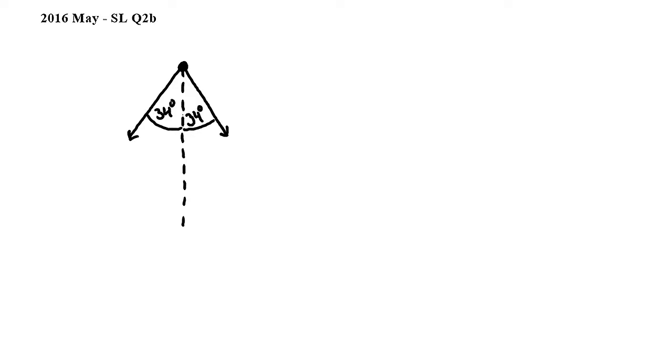In this question we have to calculate the gravitational field strength at the position of the planet. The two arrows represent two gravitational field strength vectors.